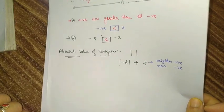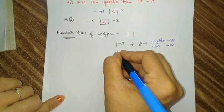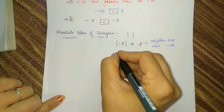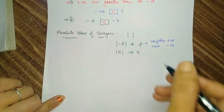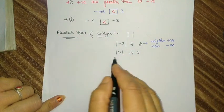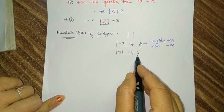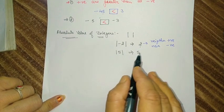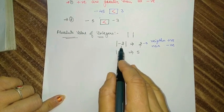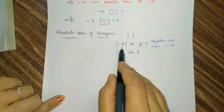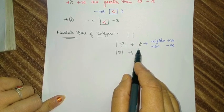Now the question arises: how do we treat a positive number? Same way — if we have to write the absolute value of 5, which is a positive integer, the answer is 5. But the difference is that here the original number is positive 5, and here we have only its numerical value, which is 5 only. Similarly, the number negative 2 gives absolute value 2 — only the numerical value of the number.